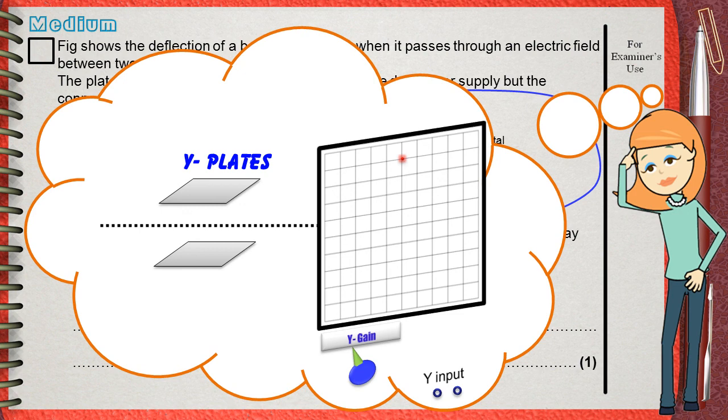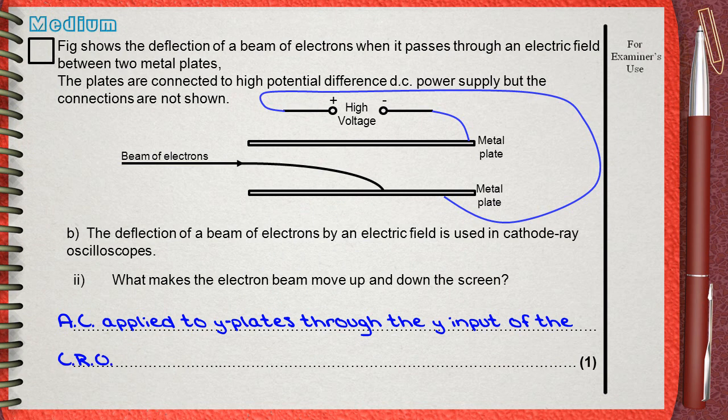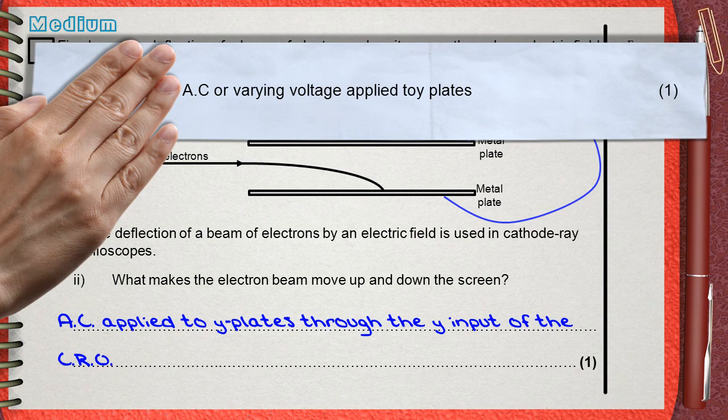So the answer will be: AC is applied to Y plates through the Y input of the CRO. Also, the mark scheme gives only one mark for this - AC or varying voltage applied to Y plates. And a note is given to define limits.